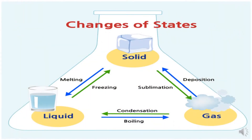Changes of states. At 32 degrees Fahrenheit or zero degrees Celsius, water becomes ice, a process known as freezing. When the temperature goes back above 32 degrees Fahrenheit, ice becomes liquid again, a process known as melting.